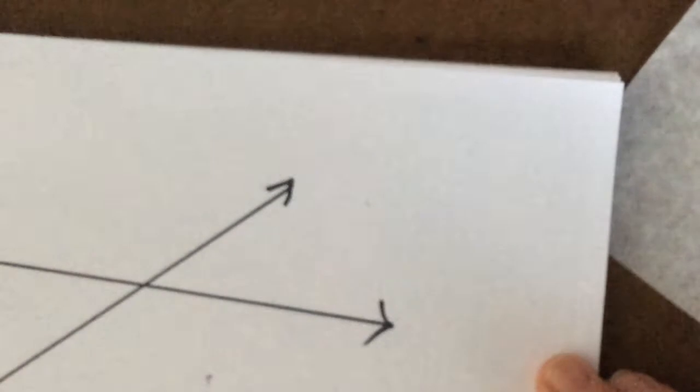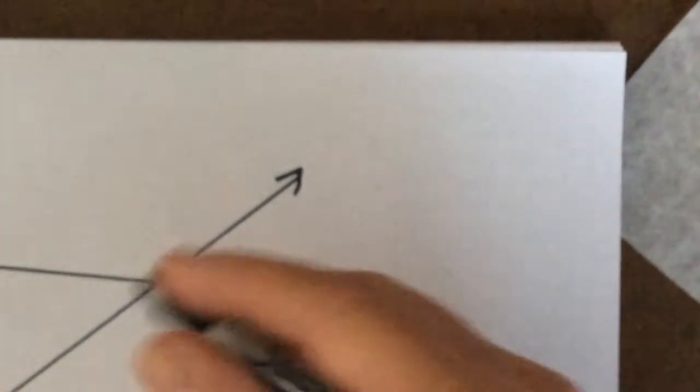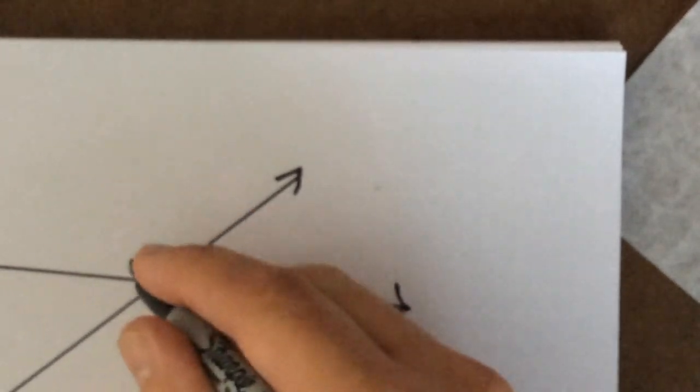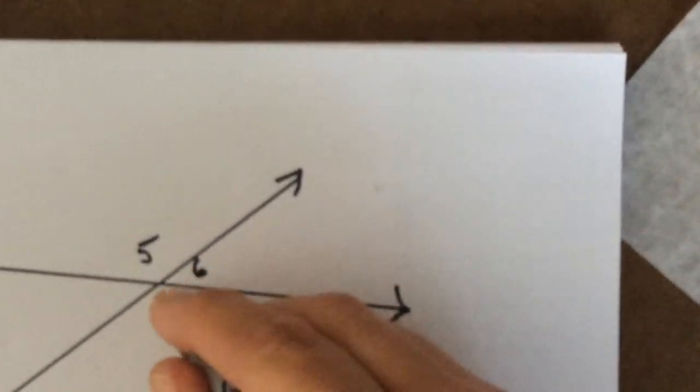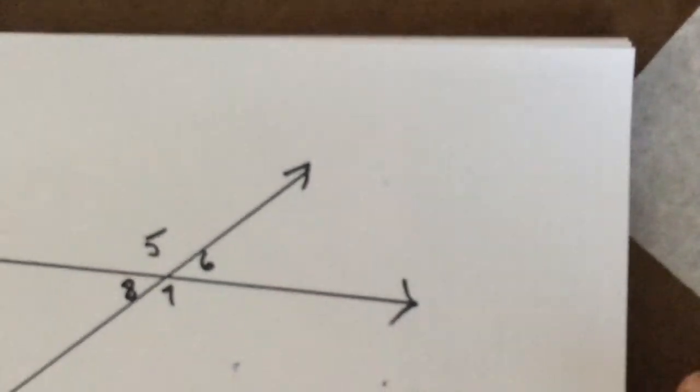And at this intersection, the same exact thing is going on, right? Let's give these guys numbers to five, six, seven, and eight. And we know that five and seven are a vertical pair and six and eight are a vertical pair and eight and seven are a linear pair, right? All of those things we know.